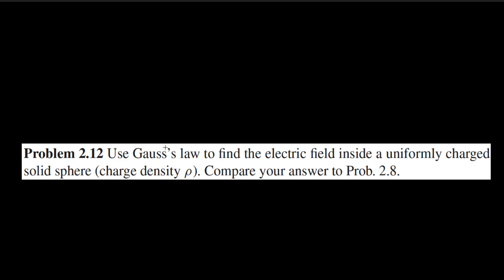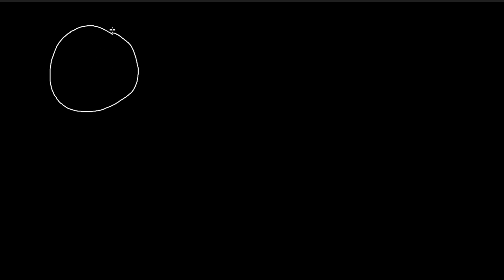In this problem, we're going to exploit Gauss's law to find the electric field inside a uniformly charged sphere. Let's start off by drawing a diagram. You can imagine a sphere being on the ground and you're looking down on it. This sphere has a radius of big R, and we want to find the electric field at a point that is a distance of small r away from the center of the sphere.